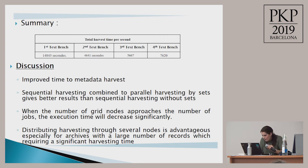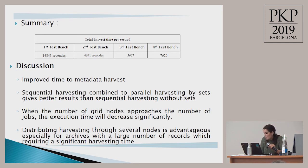According to these different test benches, the following table gives a general summary of the results obtained. It clearly appears that there is an improvement in metadata harvesting time on parallel execution according to our approach, compared to sequential or classic execution. Comparing test bench three and test bench one, sequential harvesting combined with parallel harvesting by sets gives better results than sequential harvesting alone. We can deduce that if the number of grid nodes approaches the number of jobs, execution time will decrease significantly. Distributing harvesting through several nodes is advantageous, especially for archives with a large number of records requiring significant harvesting time.